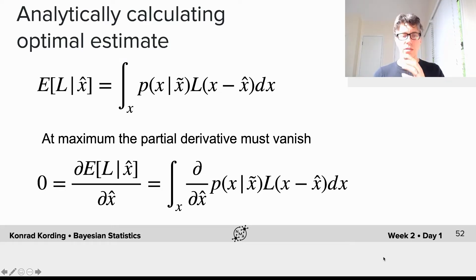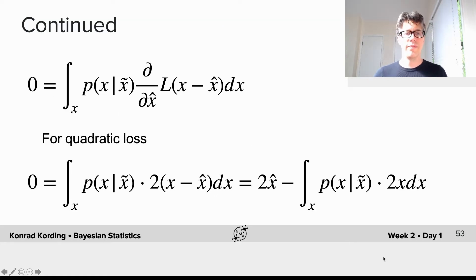So we have integral over x, derivative with respect to x̂, of p(x|x̃) times the loss L(x - x̂) dx. We can continue reformulating. One of the factors doesn't even depend on x̂, so we can move this one further to the right. So we have 0 must be integral over x, p(x|x̃), and now we have the derivative of the loss with respect to x̂.